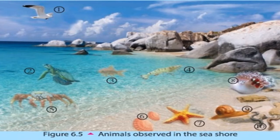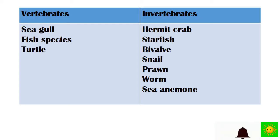Identify the vertebrates and invertebrates in this environment — it is a sea scene. According to the numbers I am reading the names: seagull, turtle, species of fish, crown, hermit crab, bivalve, starfish, sea anemone, snail, and worm. Tabulate the animals into vertebrates and invertebrates groups. Vertebrates: seagull, fish species, turtle. Invertebrates: hermit crab, starfish, bivalve, snail, crown, worm, and sea anemone.